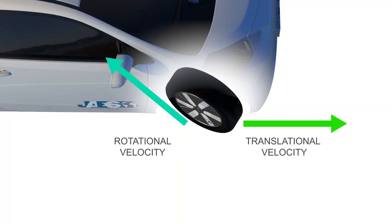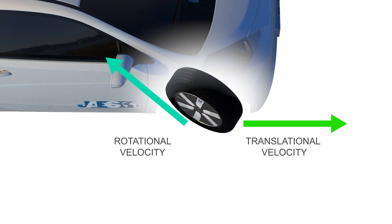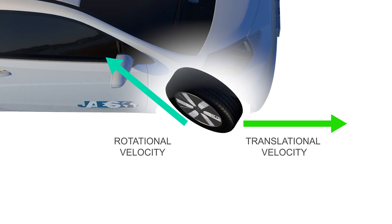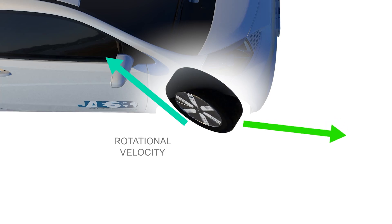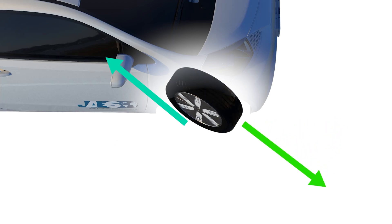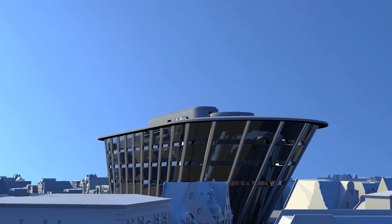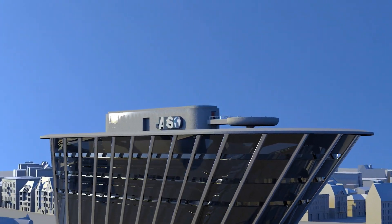Considering that even after the wheel turns, the car keeps on moving straight ahead — if we check the translational and rotational velocities at the contact point, we notice that the rotational velocity is inclined but the translational velocity is straight. The velocities do not cancel each other's value and this makes the car skid. The only way to achieve the zero velocity condition is to ensure that the translational velocity is inclined as well. This phenomenon takes place when the entire car turns with respect to a center point.